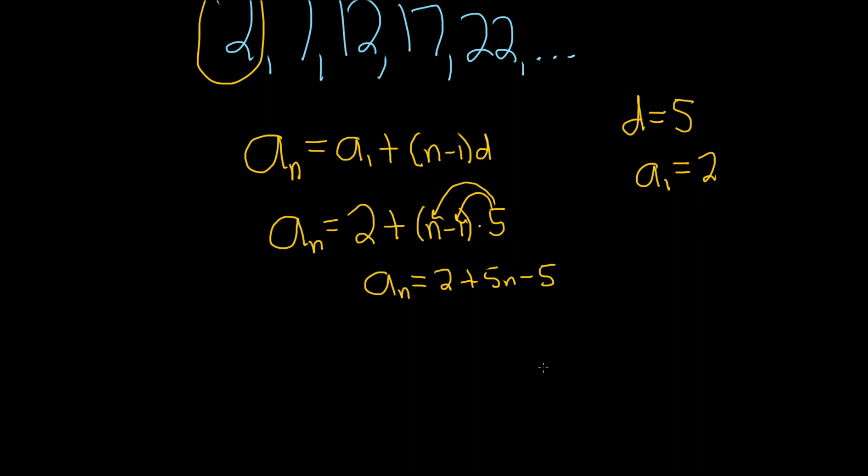Then we can do some combining of like terms. So a_n is equal to, let's see, 2 minus 5 will give us negative 3. Then we're left with the 5n. And that would be the general term or the nth term of this arithmetic sequence.